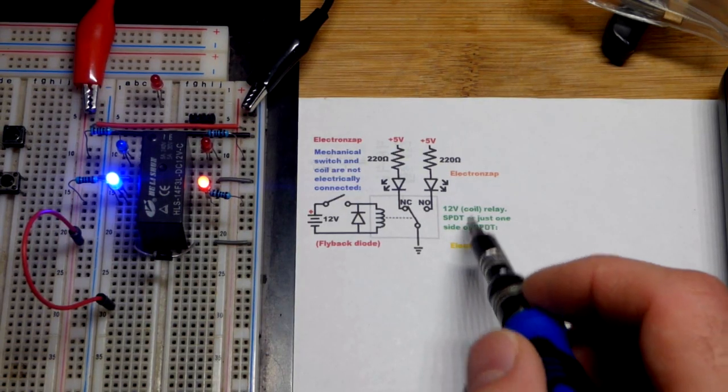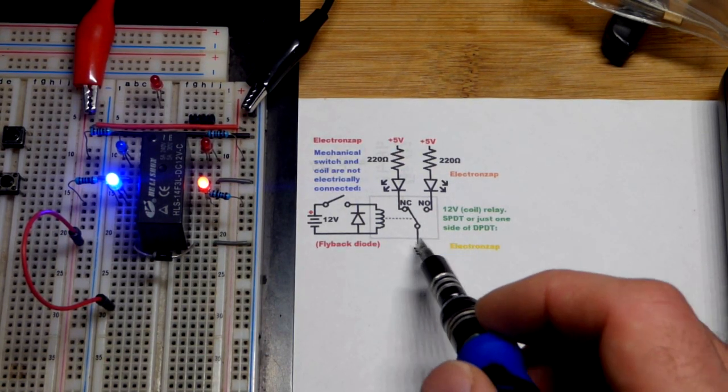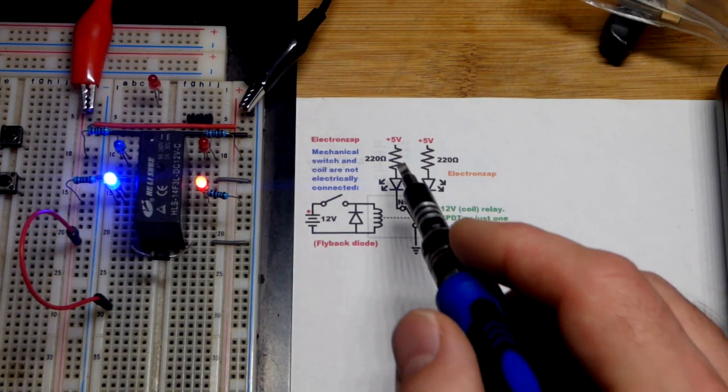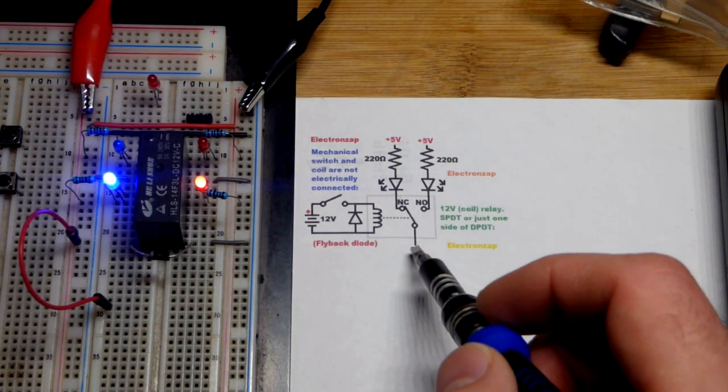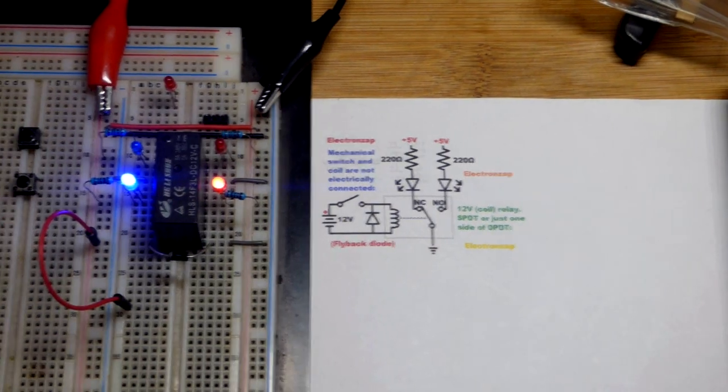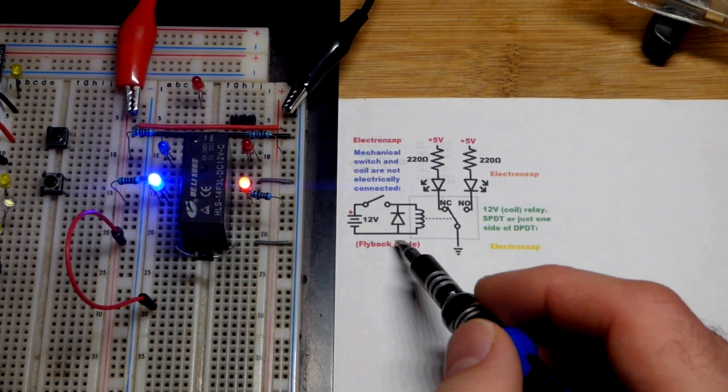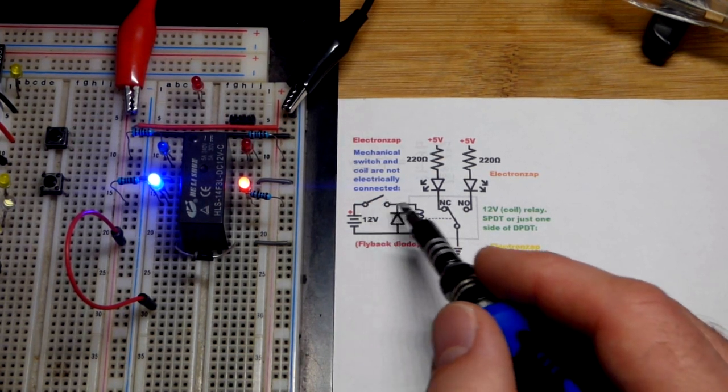another pole and double throw that we're not using, which would make it a double pole double throw, but you can use just one. Now you don't have to use the same voltage for the load as you do to energize the coil. The coil has a specific voltage - you apply about 12 volts across it and it energizes.